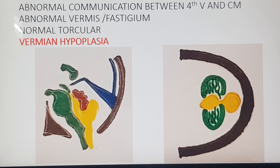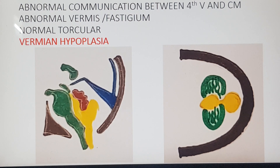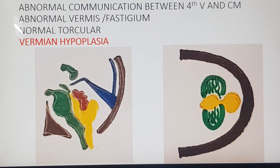Again we have a dilated cisterna magna, but there is an abnormal communication between the fourth ventricle and cisterna magna. Now look at the vermis — it is abnormally small. The fastidium is shallow and the torcular is normal. This qualifies for vermian hypoplasia. The brainstem-vermian angle is increased, whereas the brainstem-tentorial angle is normal.